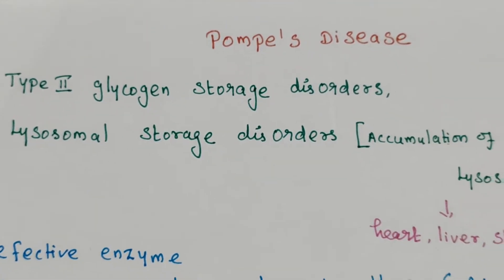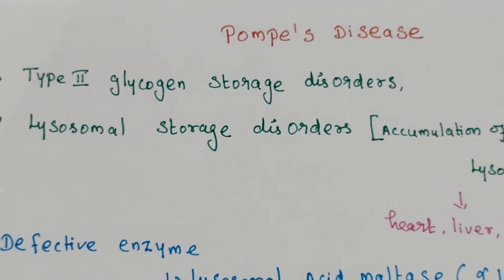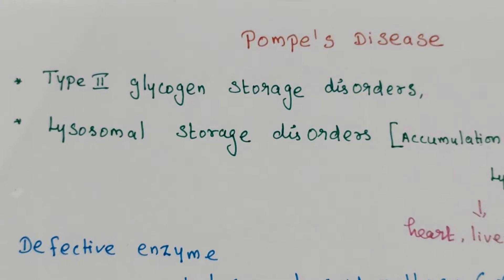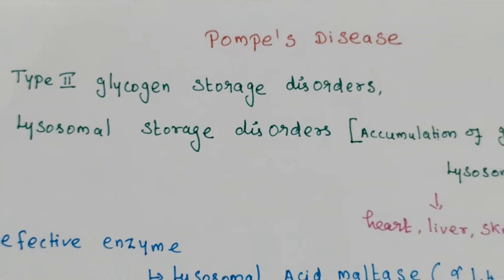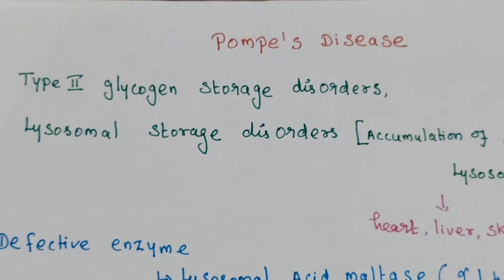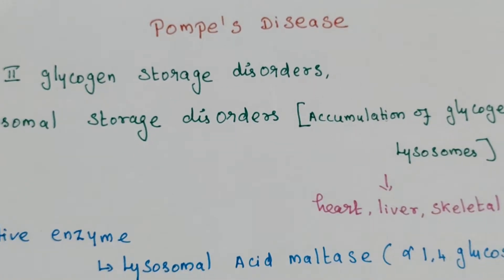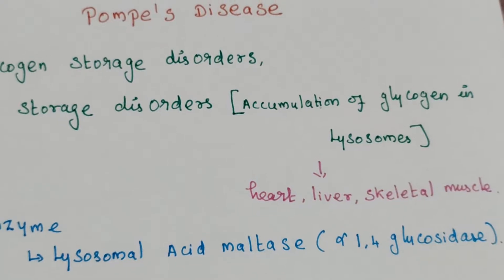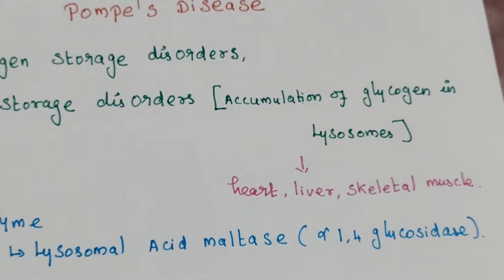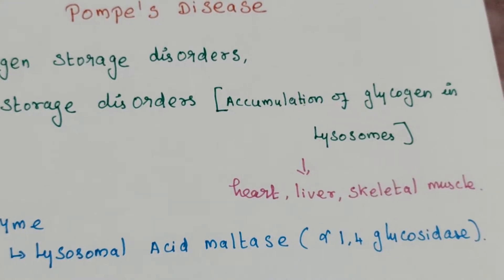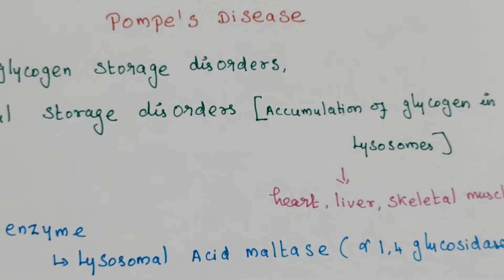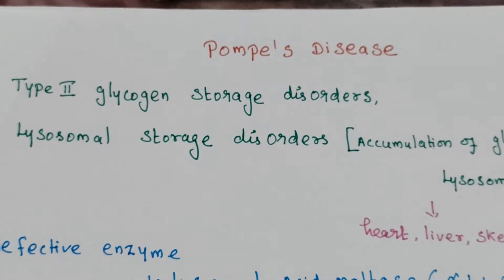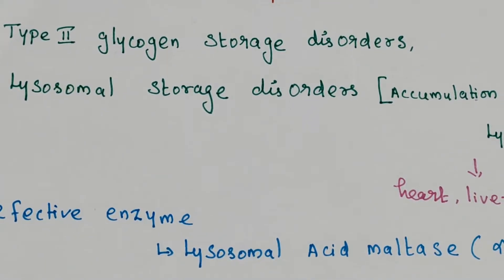The topic of discussion is Pompe's disease. This is tied to glycogen storage disorders, also included in lysosomal storage disorders, because there is accumulation of glycogen in the lysosome, particularly involving the heart, liver, and skeletal muscles. This is type 2 glycogen storage disorder, also included in lysosomal storage disorders.